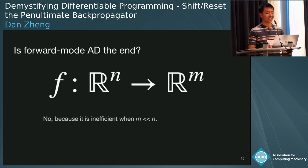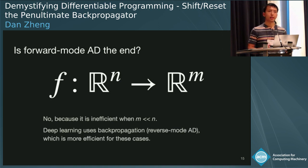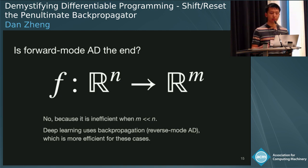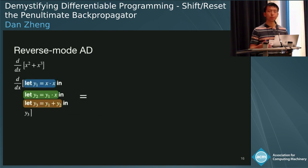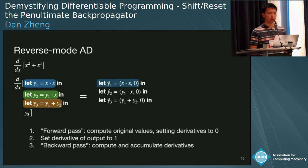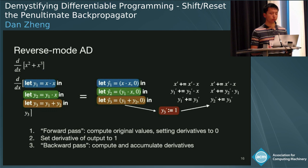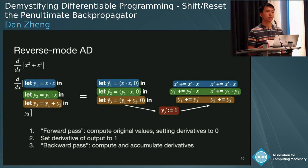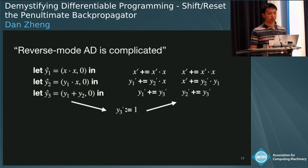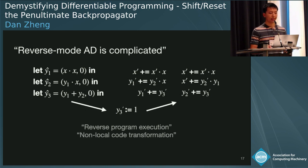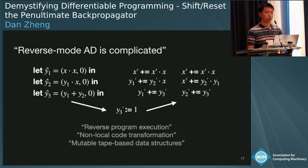Is forward mode AD the end? It's not, because it's not efficient for functions with a smaller dimensionality output compared to the input — and that's the case for deep learning. Deep learning involves functions with many large parameters but just a single scalar output. So backpropagation, or reverse mode AD, is more efficient for these cases. Let's walk through an example. We look at the same expression in ANF form: first we perform a forward pass computing original values with derivatives set to zero, then we set the derivative of the output to one, then perform a backward pass in reverse order, computing and accumulating derivatives via modified sum and product rules. You can see why people think reverse mode AD is complicated — we have this reverse program execution, and it's sometimes implemented via non-local code transformation involving mutable tape-based data structures.